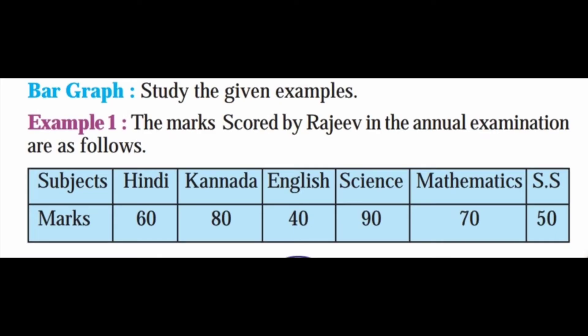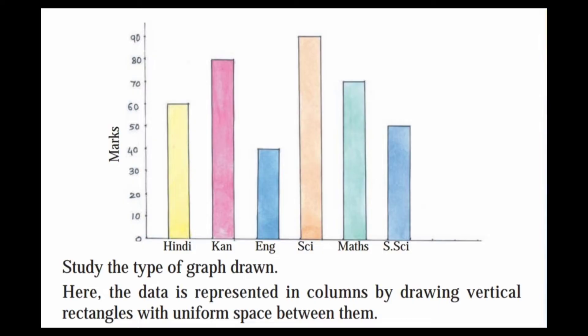Bar graph — study the given example. Example 1: the marks scored by Rajiv in the annual examination are as follows. The graph represents the number of subjects on one axis and marks on the left side.